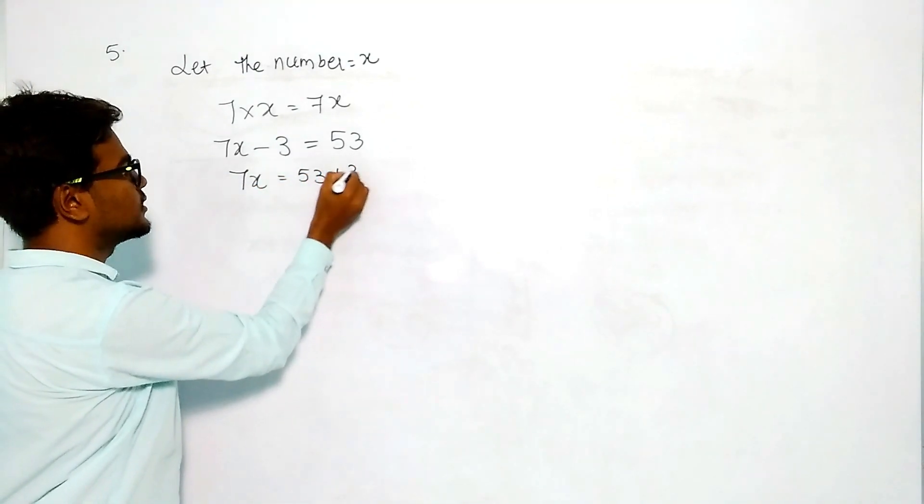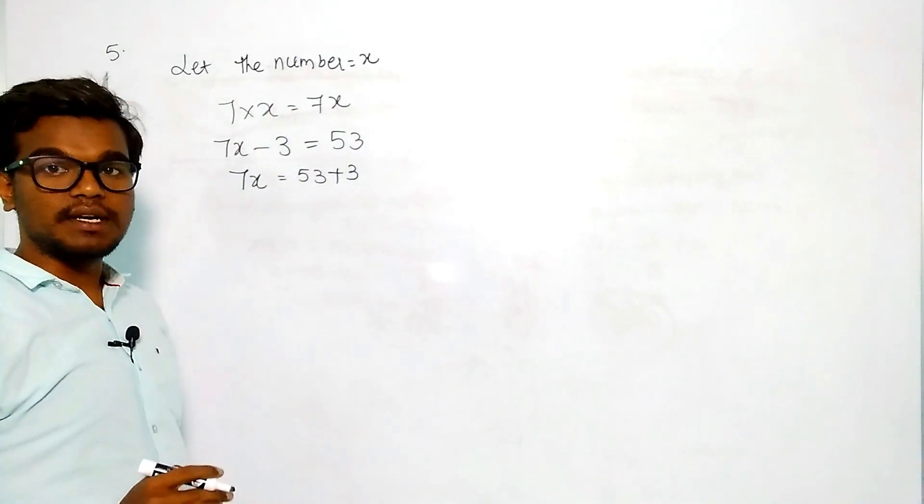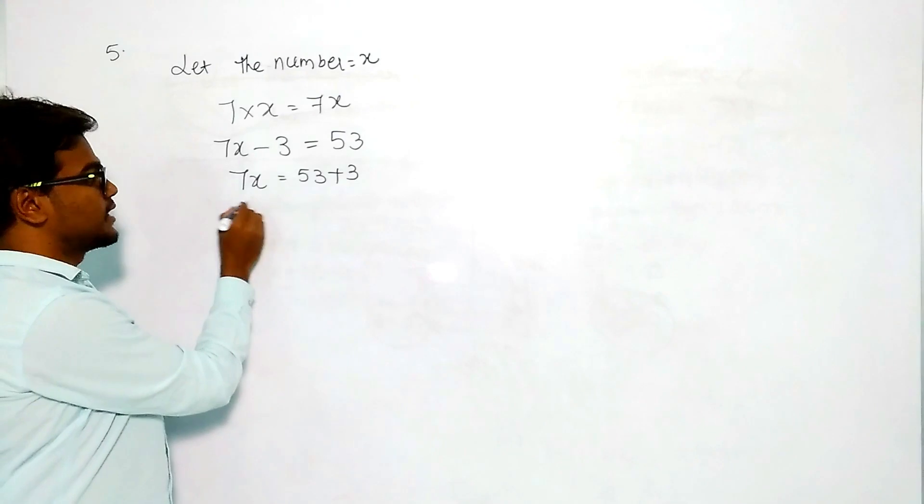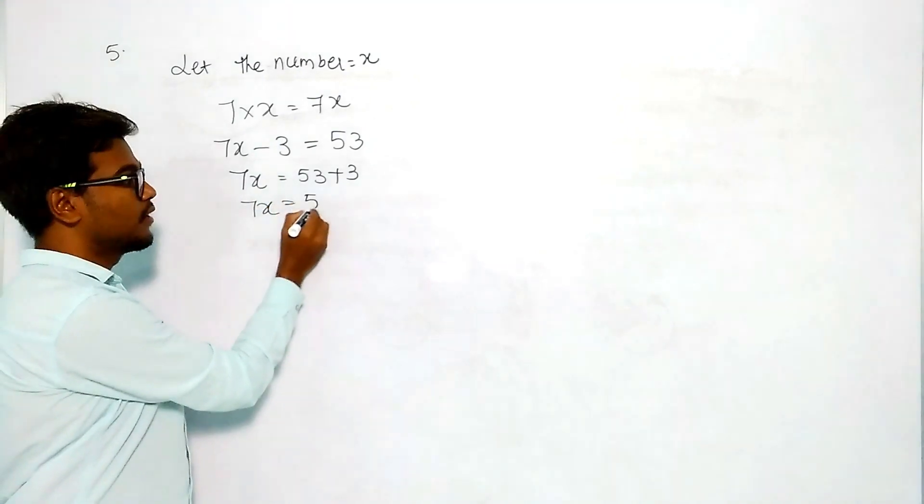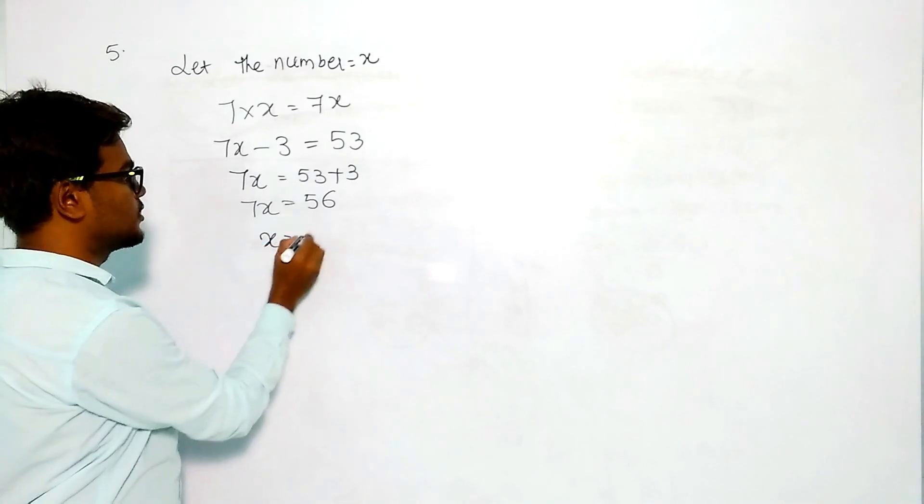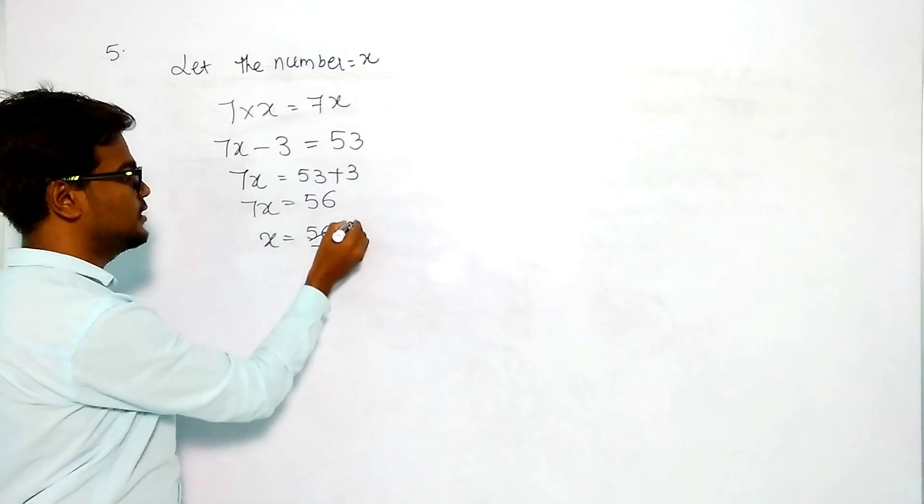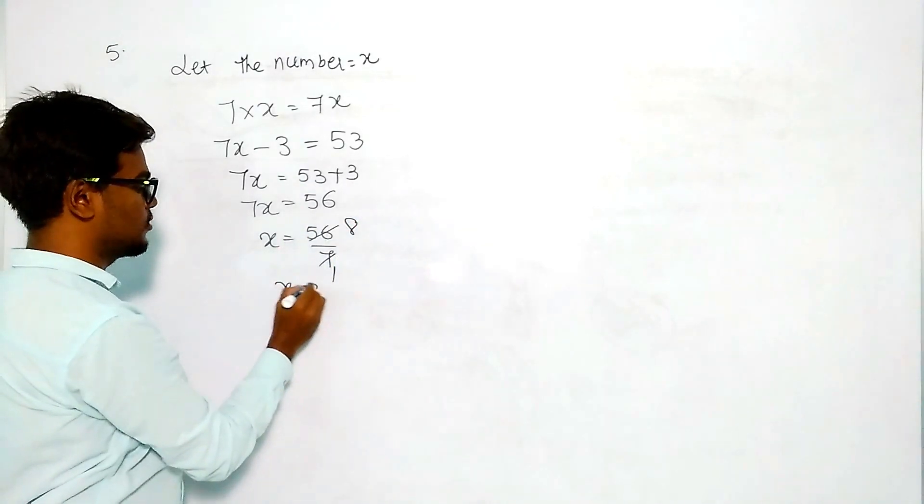This minus, if you shift to this side, becomes plus. So 7x equals 56. Then x will be equal to 56 by 7, which is 8. So x equals 8.